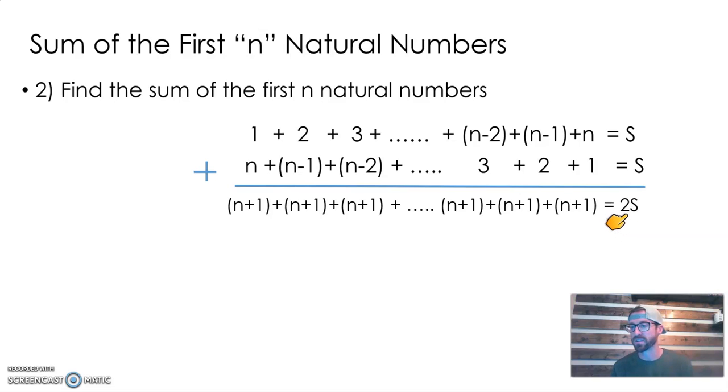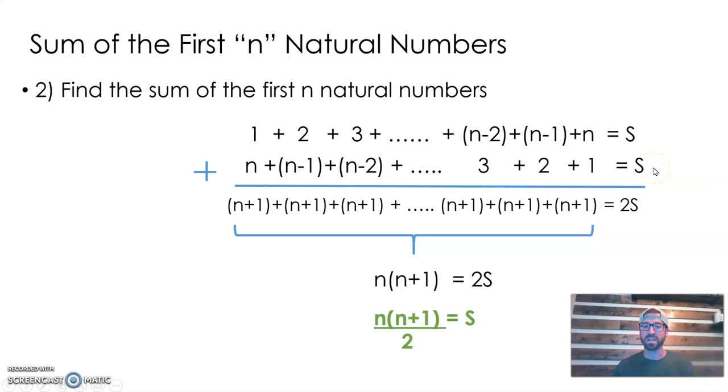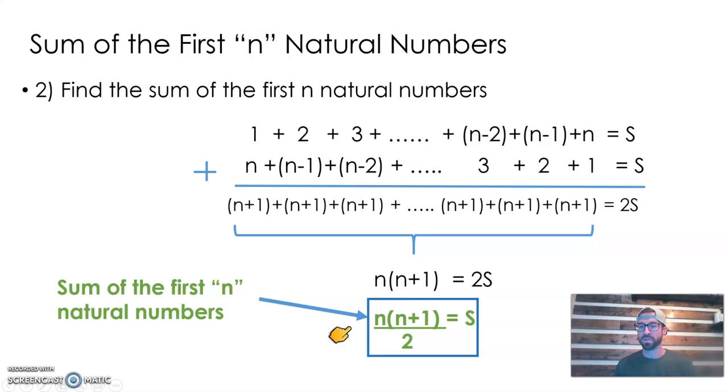You ask yourself, how many times am I adding n plus 1? You're doing it n times. That's how many times we're adding straight down. We could condense this repeated addition as multiplication: n times n plus 1 equals twice our sum. If you divide by 2 on each side, you get this formula. That's how you can find the sum of the first n natural numbers.